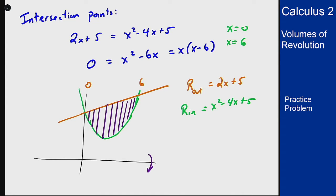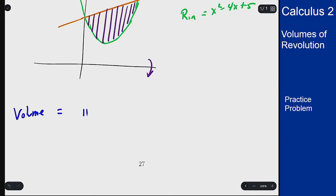And our boundary is from 0 to 6. That means we can set up this volume as pi times the integral over those bounds of outer radius squared minus inner radius squared.